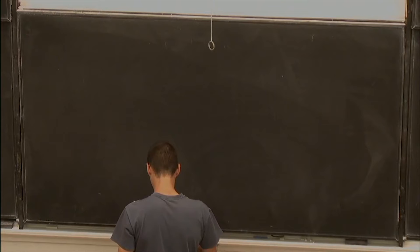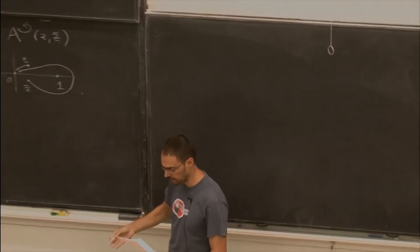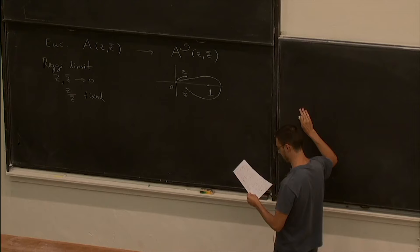So instead of a scattering amplitude we have this correlator, and instead of taking large s and fixed t, we take small zz̄ with fixed ratio. That's the direct analogy in position space. All of this can also be reformulated in Mellin space, where the analogy is even closer — you can even call the variables s and t.